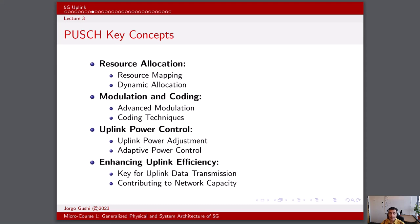The modulation and coding schemes, or MCS, used in PUSCH significantly impact data transmission quality. Higher-order modulation schemes including 64QAM and 256QAM are employed in PUSCH to achieve higher data rates when conditions allow. Error correction codes like LDPC and polar codes are used to enhance data integrity, enabling reliable communication even in the presence of noise and interference.